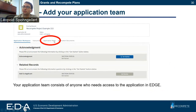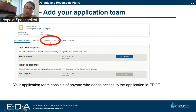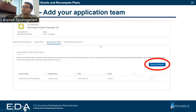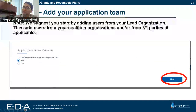Once you get into your application workspace, we recommend that you add members of your team who need to be able to get into EDGE to work on the application itself. This might be someone else from your organization who's working on this application. To have access to this application, go to the application team. You'll see only yourself at the beginning, so you'll go to add a team member. We suggest starting by adding folks from your organization before adding folks from outside your organization.